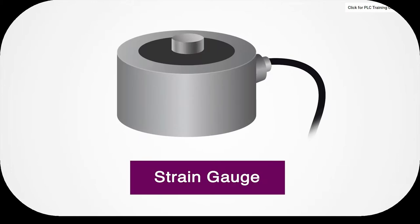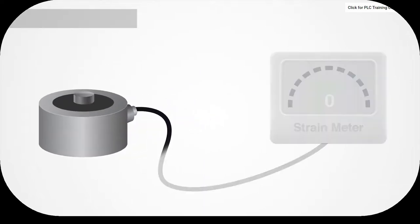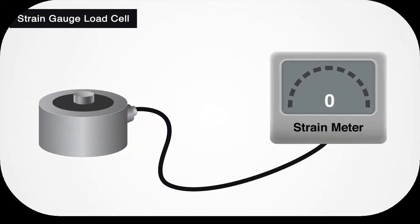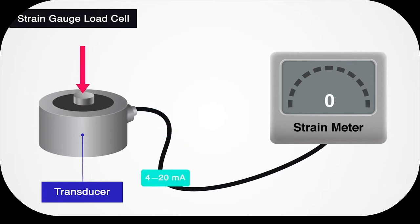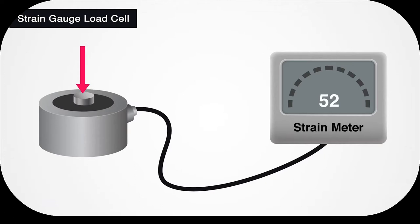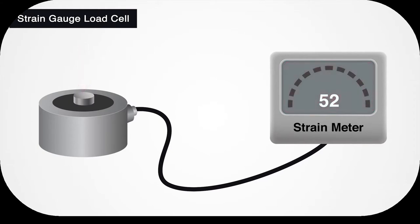The next type is the strain gauge load cell, which is the most popular style. A strain gauge load cell is a transducer that changes in electrical resistance when under stress or strain. The electrical resistance is proportional to the stress or strain placed on the cell, making it easy to calibrate into an accurate measurement. The electrical resistance from the strain gauge is linear and can be converted into a force and then a weight.